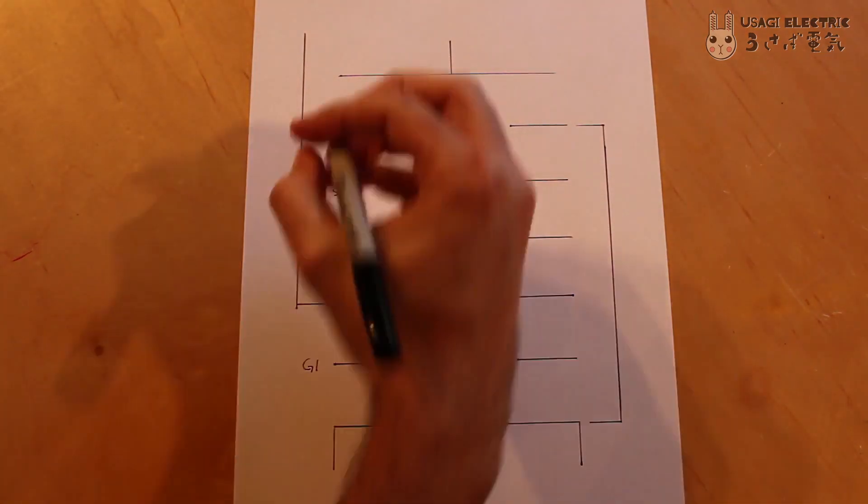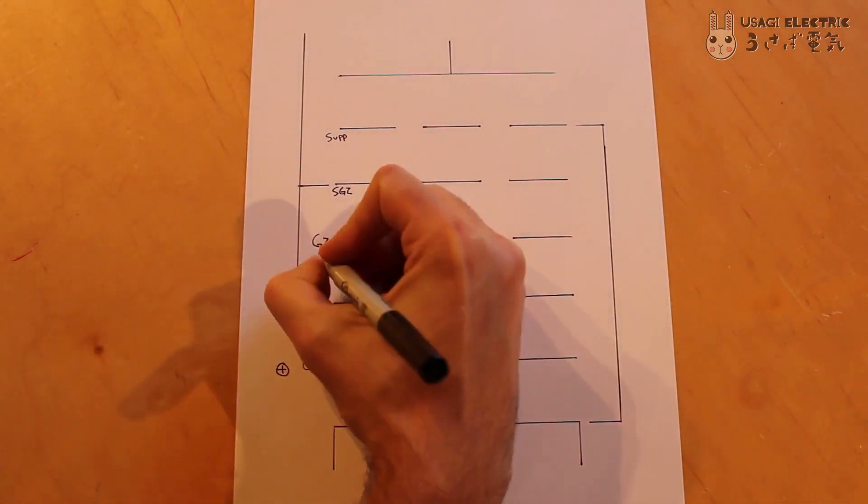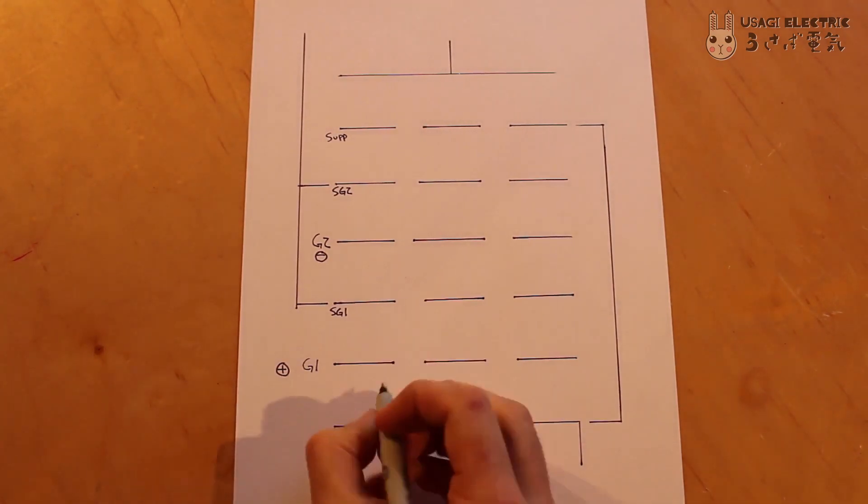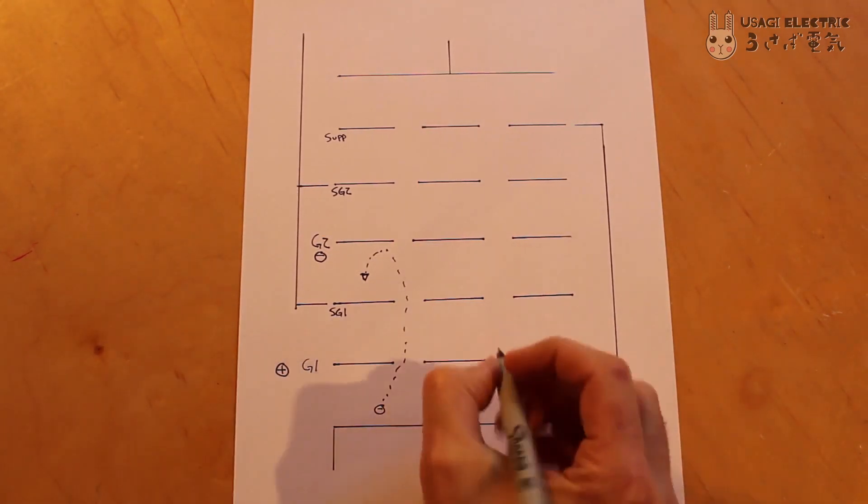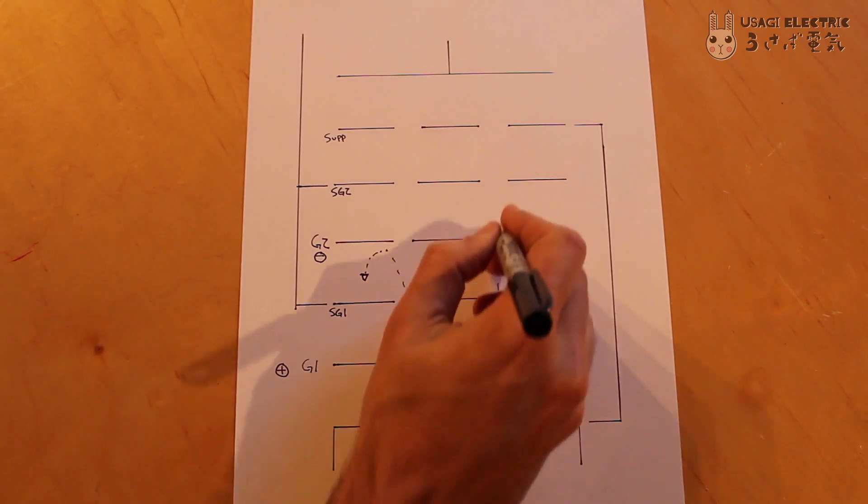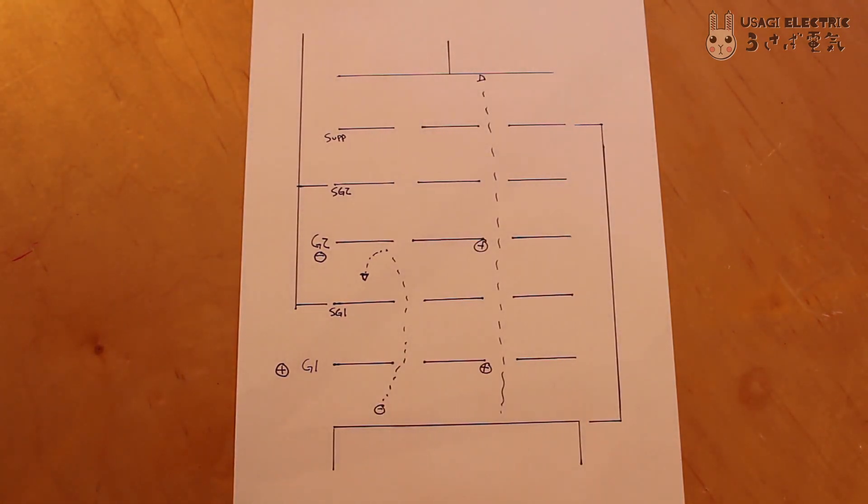If just one of the two control grids is given a positive charge while the other still has a negative charge, no electrons can flow from the cathode to the plate. Both control grids must be given a positive charge to enable electrons to flow.